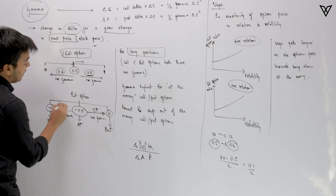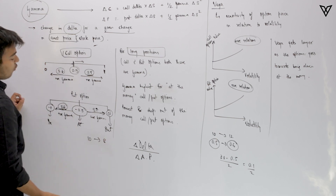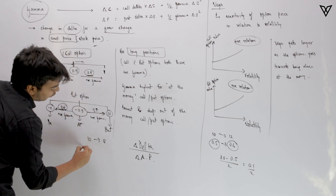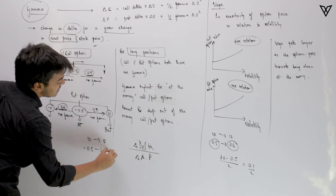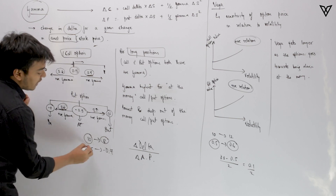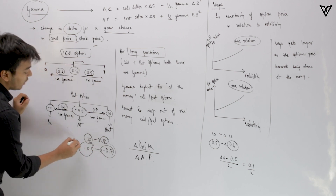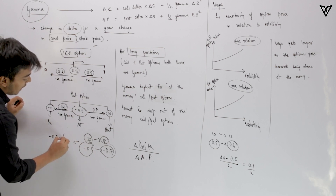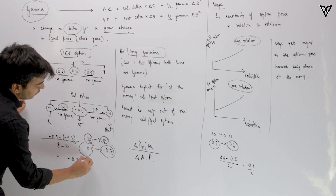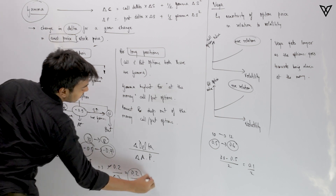If the stock price is decreasing — say from 10 to 8 — the delta increases in absolute terms, moving from minus 0.5 to minus 0.7, because as the stock price decreases, the value of the put option increases. Calculating gamma: minus 0.7 minus minus 0.5 divided by 8 minus 10 gives minus 0.2 divided by minus 2, which equals 0.1 — a positive number.